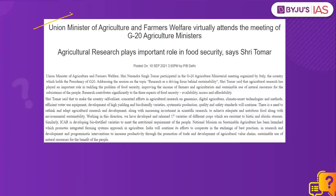This article in the PIB has a reference to the National Mission on Sustainable Agriculture, and hence we've taken this question. The government of India has announced a slew of measures to tackle climate change. As part of these measures, the National Action Plan on Climate Change, that is NAPCC, was launched in the year 2008. The National Mission for Sustainable Agriculture is one such mission under NAPCC, launched to facilitate mitigation of the ill effects of climate change.